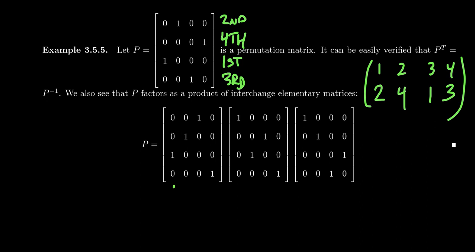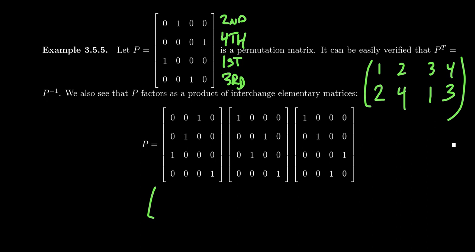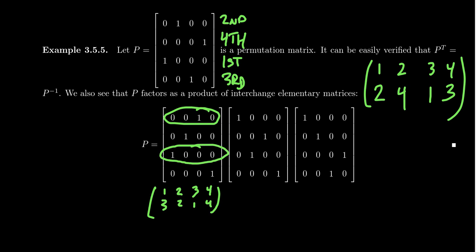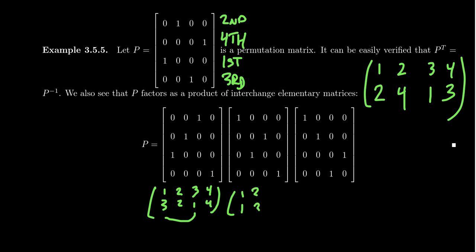This is a generalization of the idea of interchange. With an interchange matrix — you can see three interchange matrices on screen — the first interchange, reading left to right, swaps rows one and three, while rows two and four are left alone. Those are the genuine second and fourth rows of the identity. In another example, the first row remains the first row, the second row becomes the third, and the third row becomes the second, while the fourth row is left fixed.